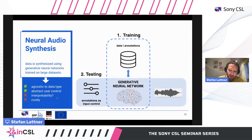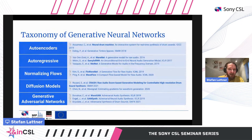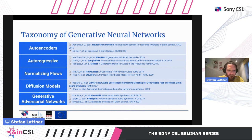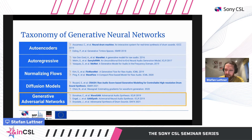Training such models is generally costly — it can take weeks, requires lots of data, and may not run in real time without appropriate hardware. There are many different generative neural networks that have been applied to audio, including autoencoders, autoregressive models, and normalizing flows — though normalizing flows are limited to lower-dimensional data. Diffusion models are currently a hot topic for generating complex data, but the quasi-standard over the last four or five years has been generative adversarial networks, which is why we used them in our work.